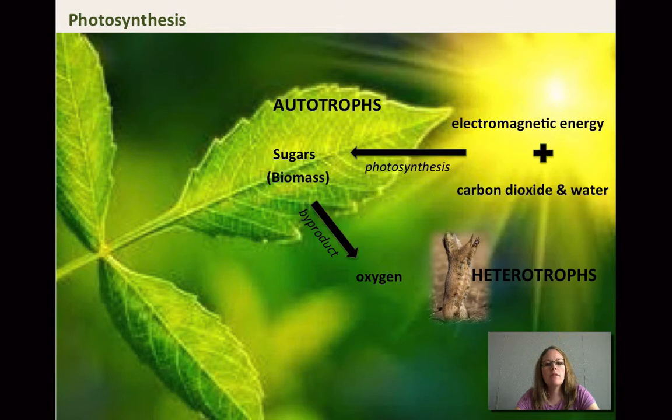So that process of photosynthesis together, the two different processes that we're going to talk about, the components of photosynthesis, work together to create sugars or the biomass. Biomass can be above ground or below ground in the root structures. And then the byproduct of that is oxygen.